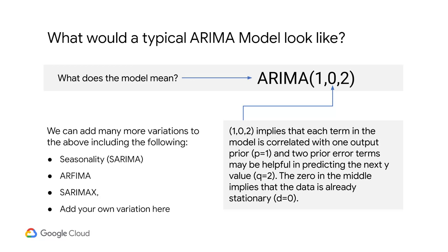We see that D is typically 0 but could be 1. We also realize that P can be 0, 1, 2, or higher, and Q can also be 0, 1, 2, or higher. That's more than a dozen combinations. This is how we can get a variety of models from a single time series.